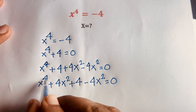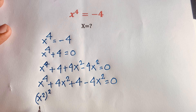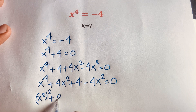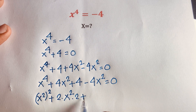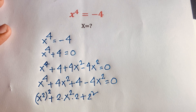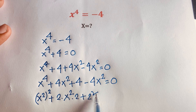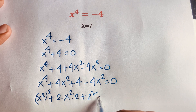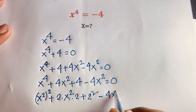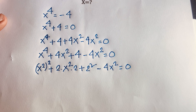Now x⁴ = (x²)², and using the identity a² + 2ab + b², I can write x⁴ + 4x² + 4 as (x² + 2)². So the equation becomes (x² + 2)² - 4x² = 0.